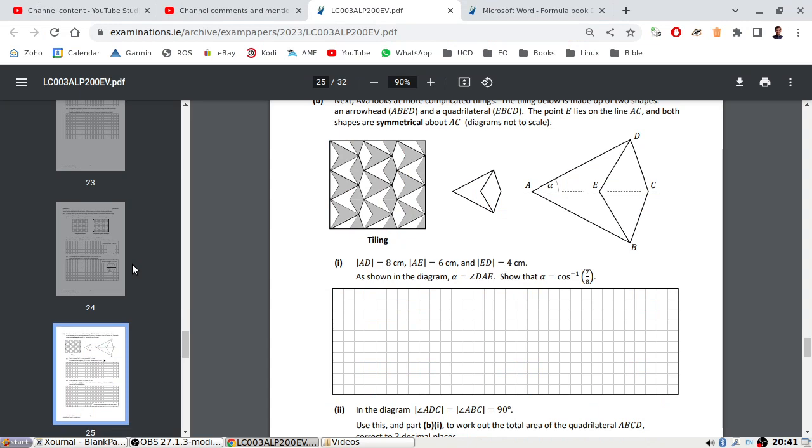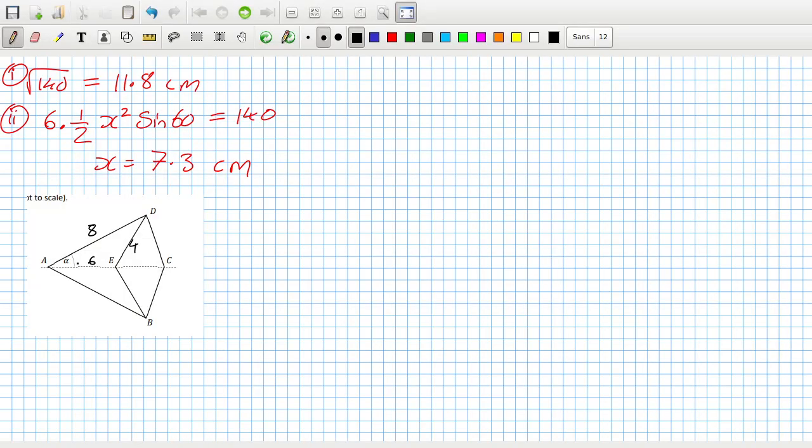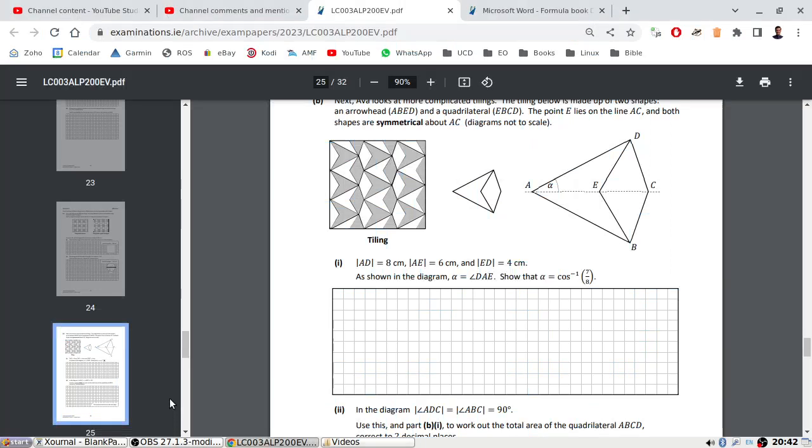Angle DAE. Okay, so we want this angle here. Cosine rule: 4 squared equals 8 squared plus 6 squared minus twice 8 by 6 by cos alpha. So rearranging this, I get 4 squared minus 8 squared minus 6 squared divided by minus 2 and 8 and 6, and I get 7 over 8. Excellent.